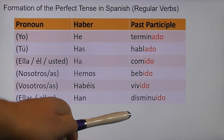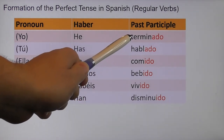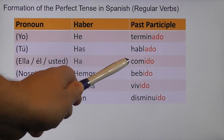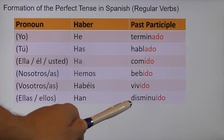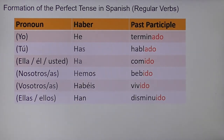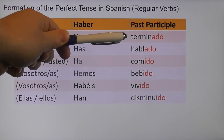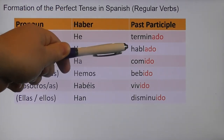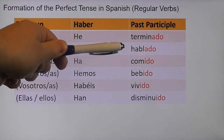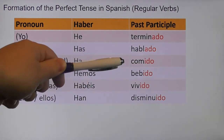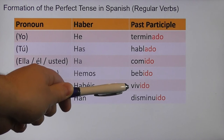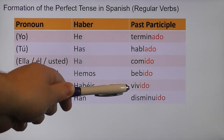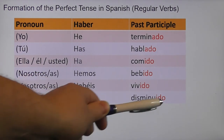To form our past participle, we take the infinitive verb. For AR verbs like terminar and hablar, we take off the AR and replace with ADO: terminado (finished), hablado (talked). For ER verbs like comer and beber, we take off the ER and add IDO: comido (eaten), bebido (drunk). For IR verbs like vivir and disminuir, we take off the IR and add IDO: vivido (lived), disminuido (diminished).